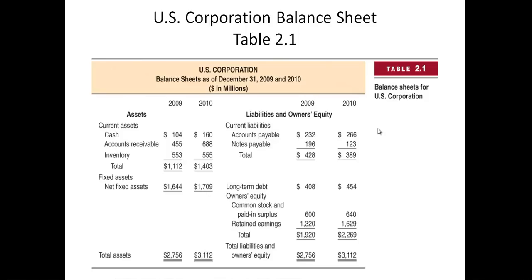Oftentimes you hear about home equity — equity in your house. If you have a house that's worth $400,000 and you owe $80,000 on the mortgage, you'll have $320,000 in equity.